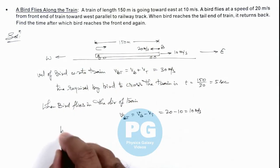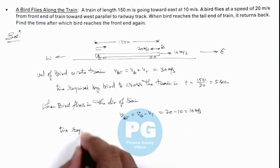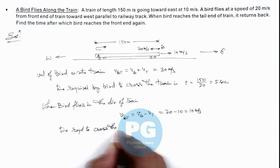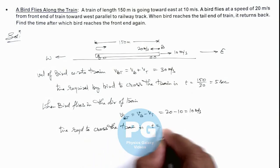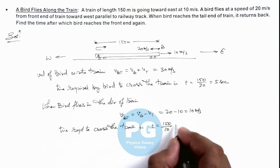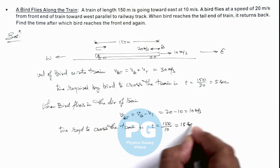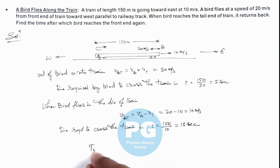If we calculate now the time required to cross the train, this time we can calculate as 150 by 10, which is the relative speed of bird with respect to train, so this is 15 seconds. So total time, which is required to be calculated in the problem, is 5 seconds plus 15 seconds. This is 20 seconds. That is the final result of this problem.